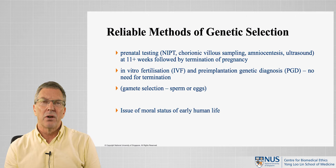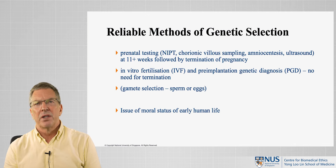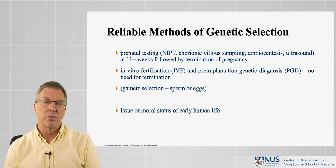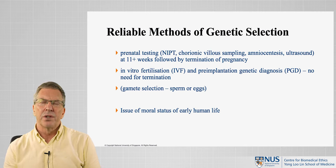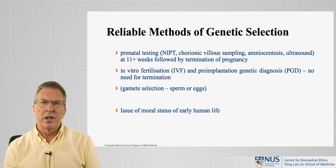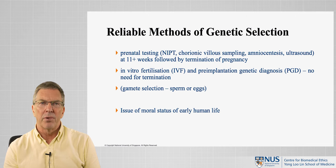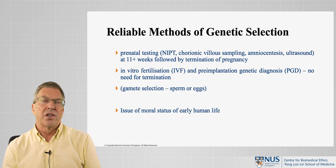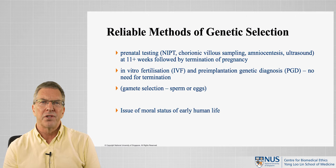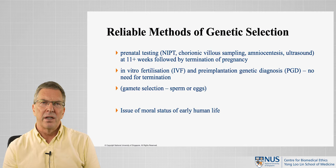Secondly, there's in vitro fertilisation, producing a number of embryos — often 8 to 10 embryos — and genetically testing these embryos with what used to be called pre-implantation genetic diagnosis, now called pre-implantation genetic testing, PGT. There's no need for termination of pregnancy, but this does often result in the discarding of spare embryos. This can be done incidentally as part of IVF for infertility, or intentionally as a way of selecting characteristics in future children. It's also possible to test gametes — sperm or eggs — which has been done as a method of sex selection.